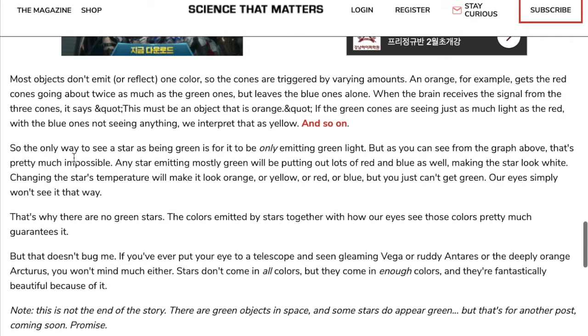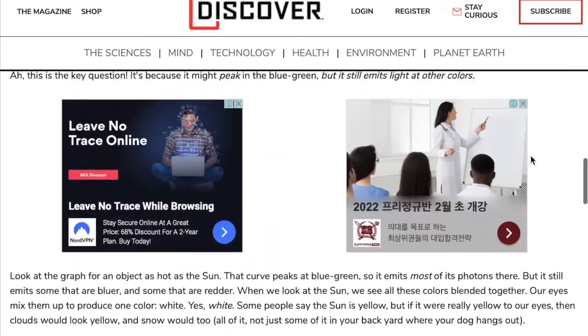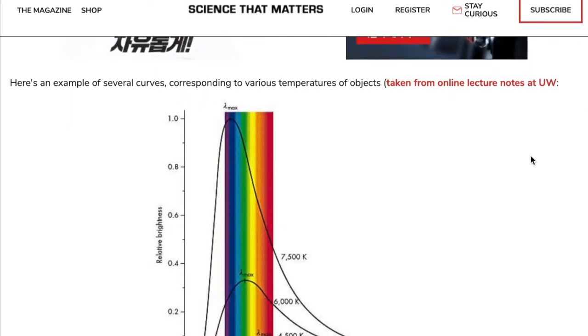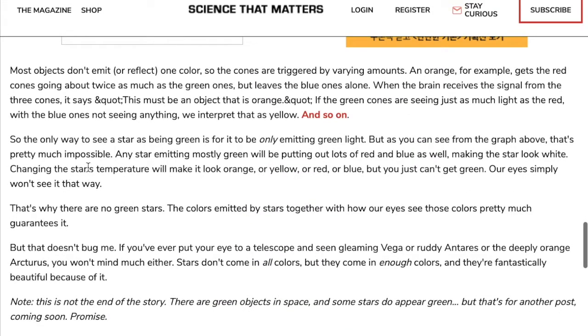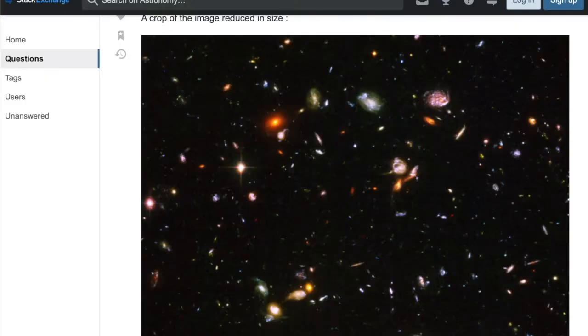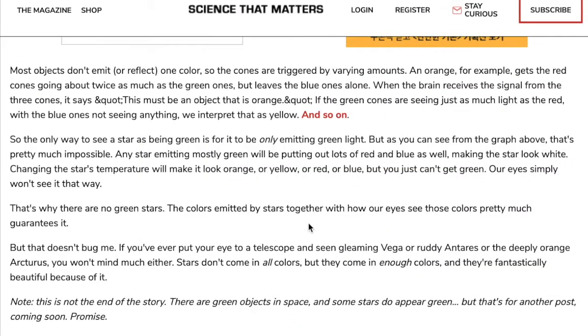And they go through a long explanation. Right here. So, the only way to see a star as being green is for it to be only emitting green light. But as you can see from the graph above, that's pretty much impossible. Any star emitting mostly green will be putting out lots of red and blue as well, making the star look white. Change the star's temperature will make it look orange or yellow or red or blue, but you just can't get green. Our eyes simply won't see it that way. We'll tell that to this one. Look at that. An entire galaxy is green. They say it's impossible.